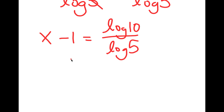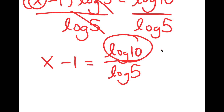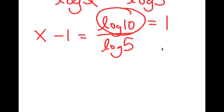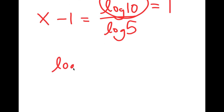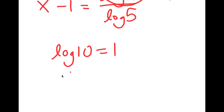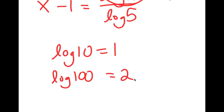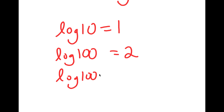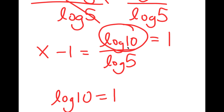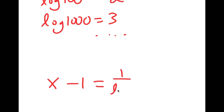Now, another important logarithm property is that log 10 is actually equal to 1. And along with that, log 100 is equal to 2, and log 1,000 is equal to 3 — so it goes on and so forth. So if I replace log 10 with 1, I get x minus 1 is equal to 1 over log 5.